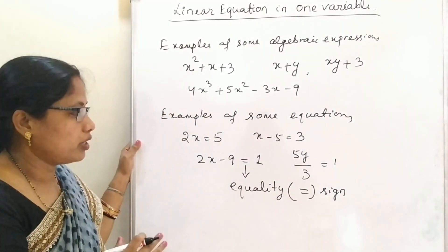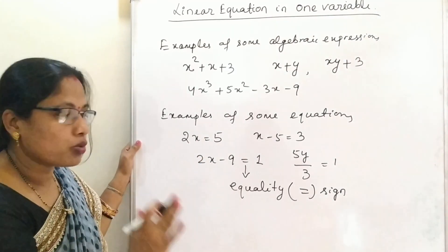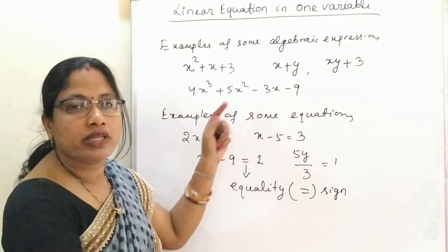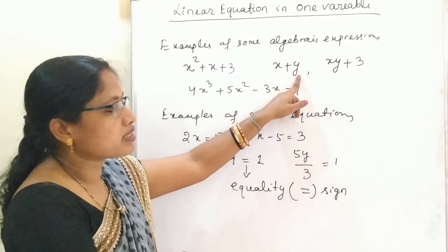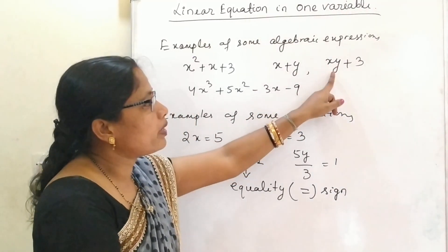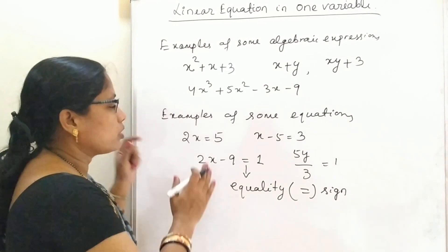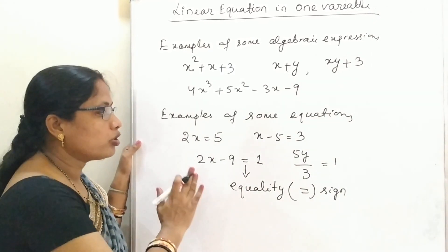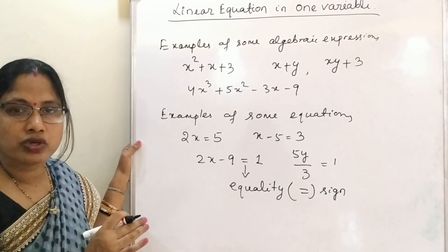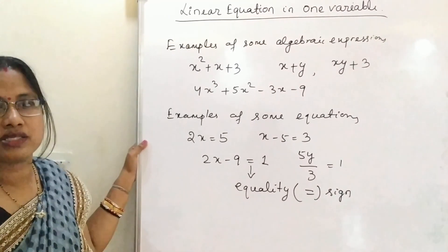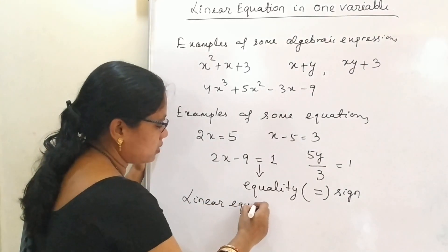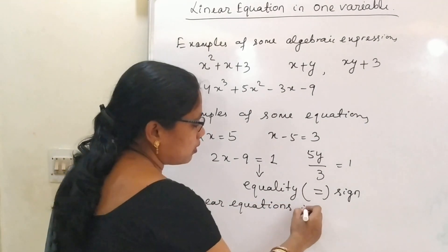The equations you have learned so far are known as linear equations, where the degree of the variable is 1. Some expressions have more than one variable — for example, x plus y has two variables, x and y. But in equations, so far you have learned about one variable only. In this session we will learn linear equations in one variable.